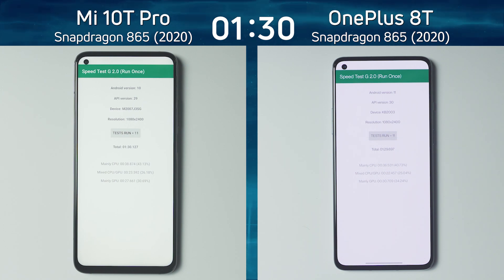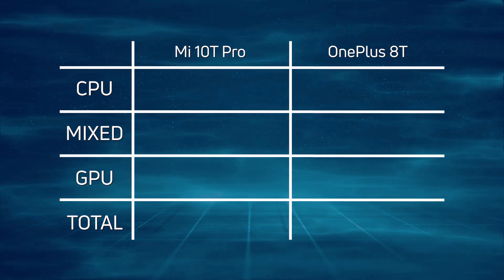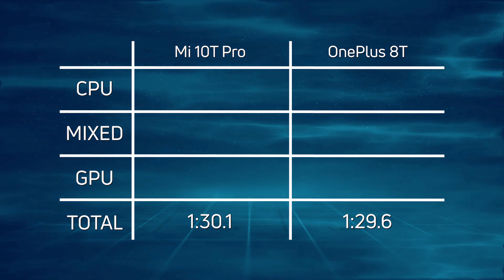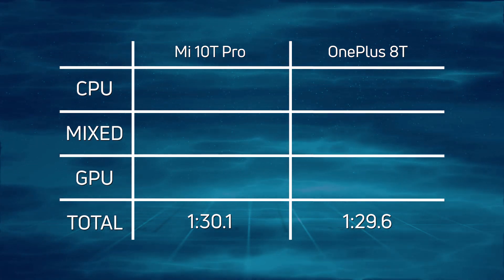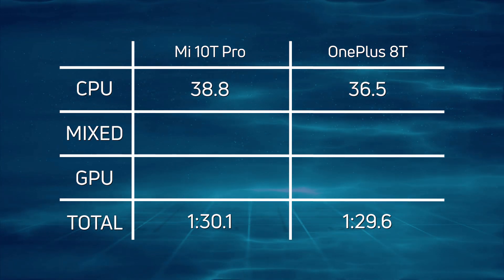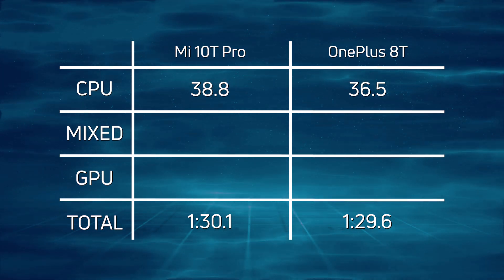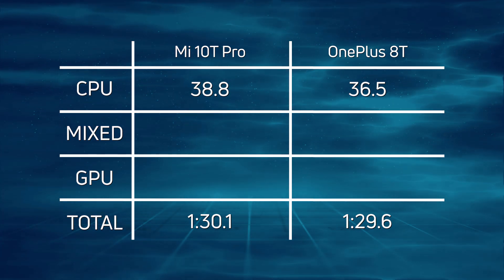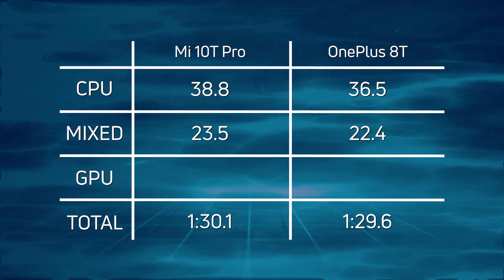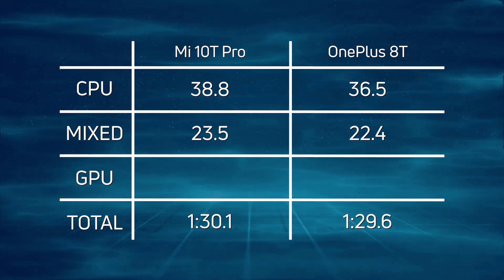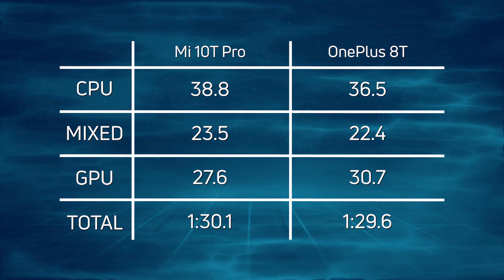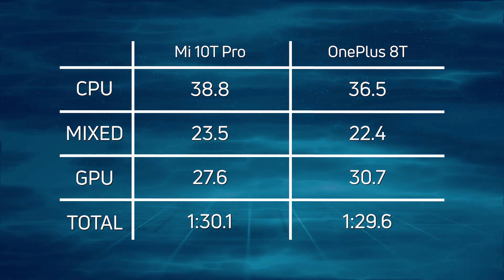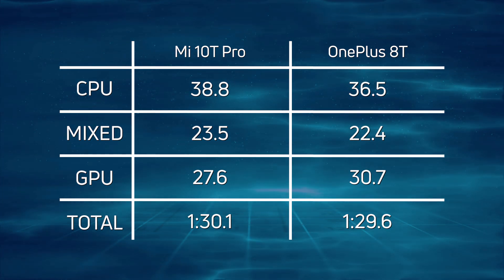Let's break down the scores and see exactly what happened. It was a very, very close finish. The overall winner was the OnePlus 8T at 1 minute 29.6, and then half a second later came the Xiaomi Mi 10T Pro at 1 minute 30.1. CPU was definitely a win for the OnePlus 8T: 36.5 versus 38.8 — a 2.3-second difference. The OnePlus 8T led through the CPU section and kept up that lead in the mixed CPU/GPU part: 23.5 versus 22.4, a difference of just 1.1 seconds. However, when we get into the GPU, everything goes completely haywire — the Mi 10T Pro made a time of 27.6 compared to 30.7 for the OnePlus 8T, but that wasn't enough for it to gain the overall lead.